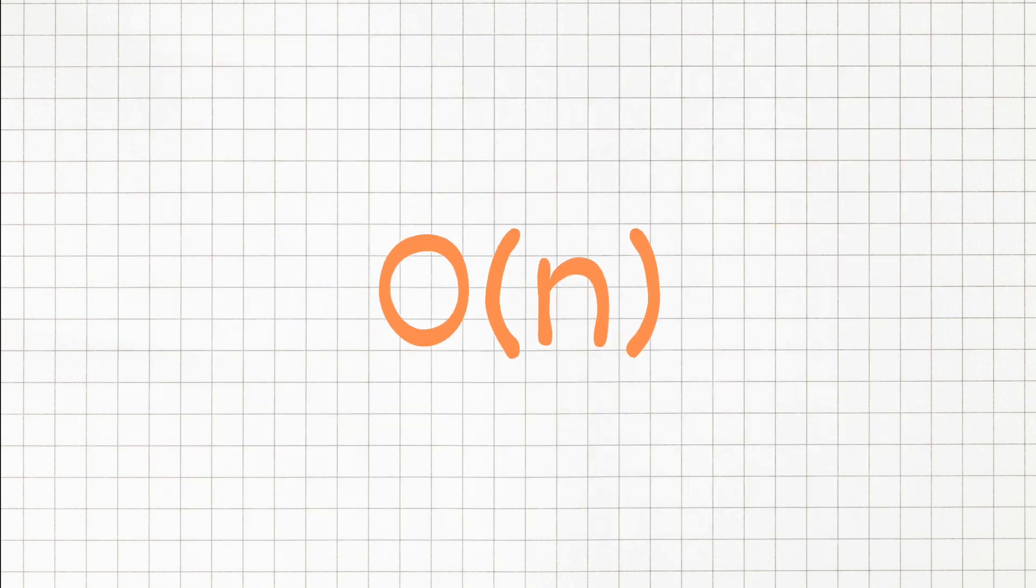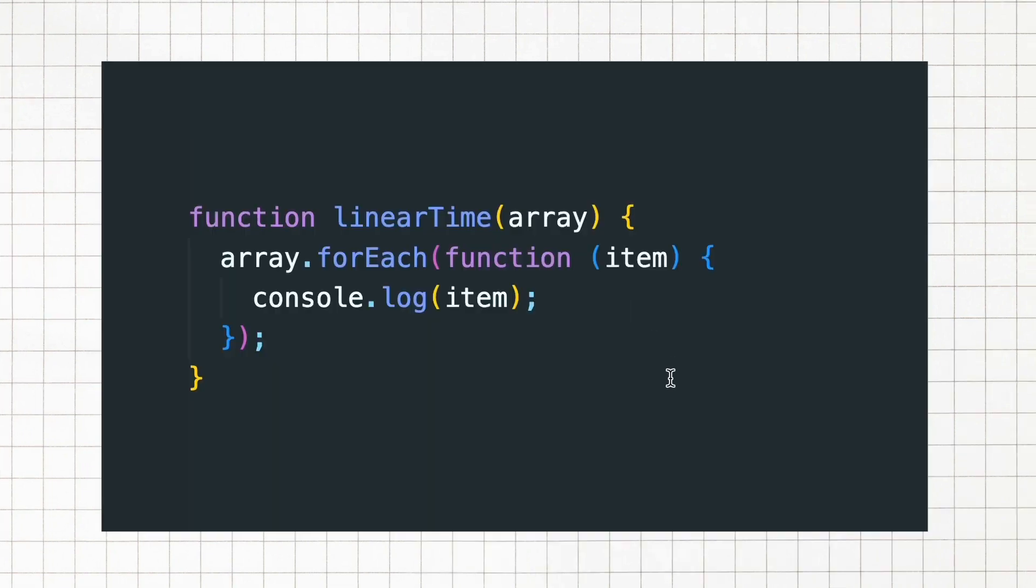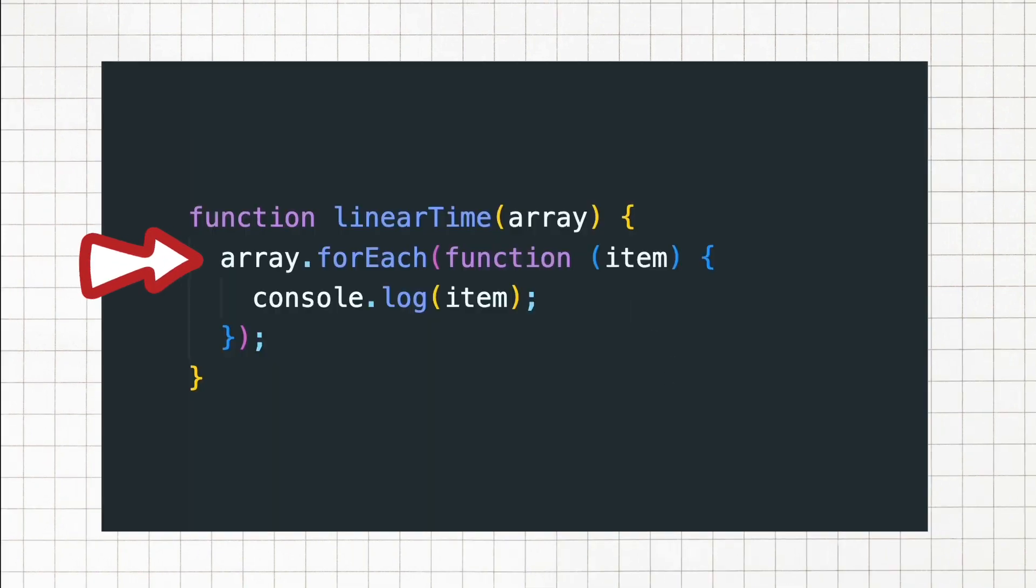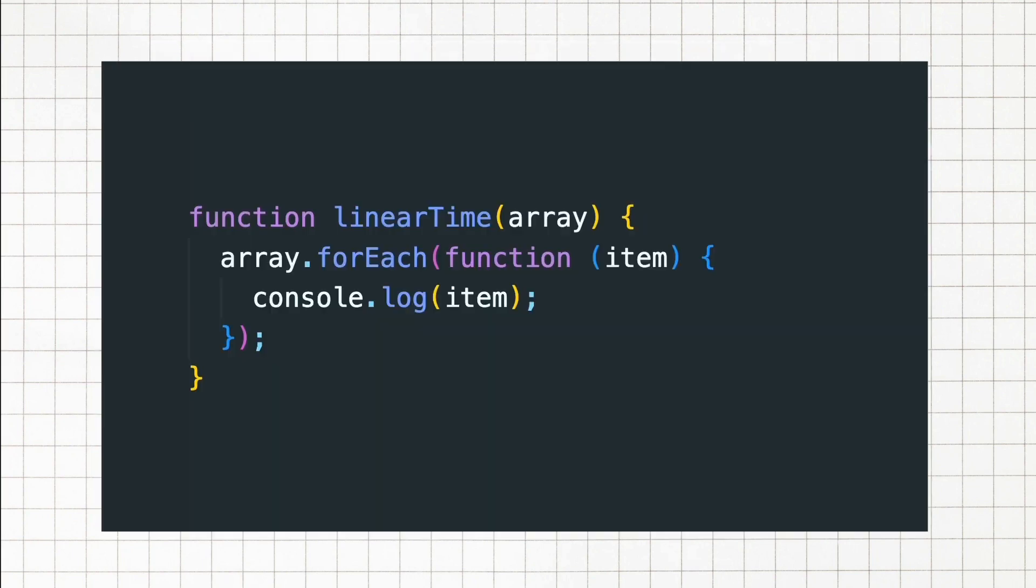Next we have O of n, also known as linear time complexity. This is like checking each box one by one until you find your item. It's pretty straightforward, as your input grows, the time it takes grows linearly. For every item in the array, we are performing an operation, hence the time it takes scales linearly with the number of items.